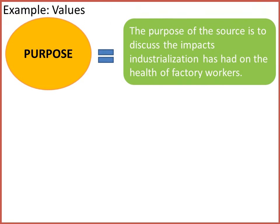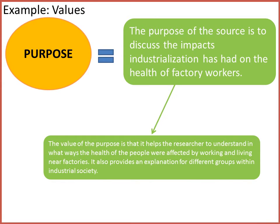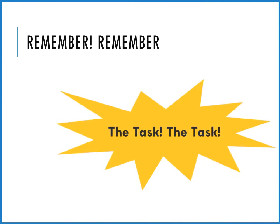We can also extract values from the purpose. We're looking at what the purpose is and thinking: how does this document — created for a certain reason, with information tailored in a certain direction — help us to better understand the impacts of industrialization in 19th century Britain? What we can say here is the value of the purpose is that it helps the researcher to understand in what ways the health of the people were affected by working and living near factories. It also provides an explanation for different groups within industrial society. We know it's going to be discussing different groups because of the broadness of the title, and the extract itself focuses on a particular group.